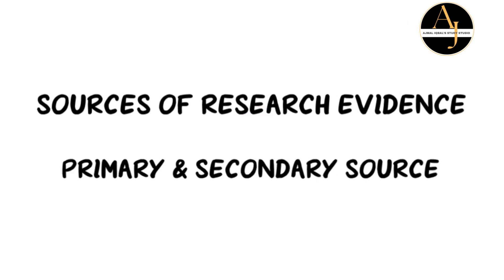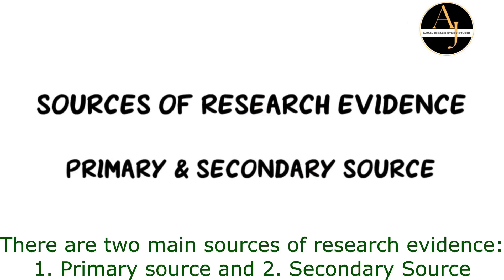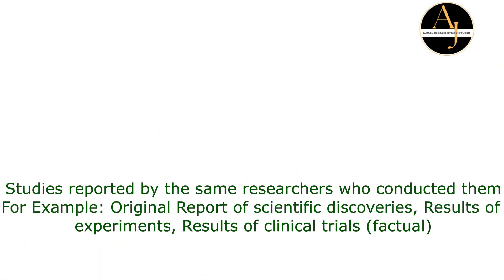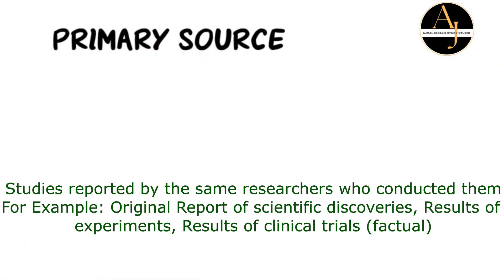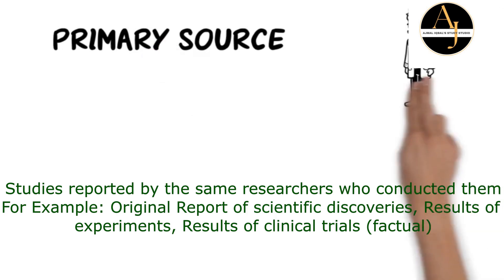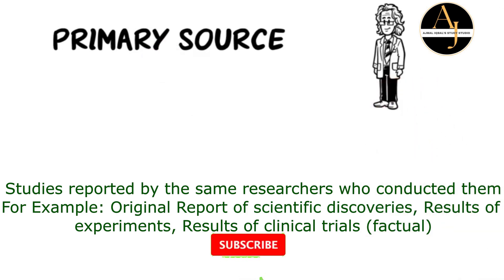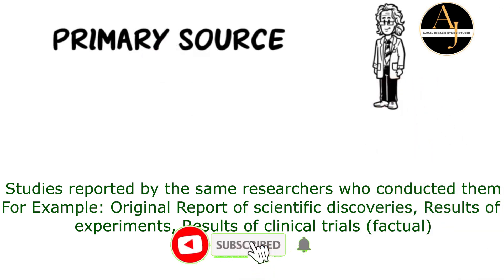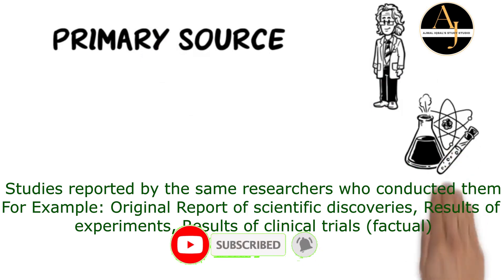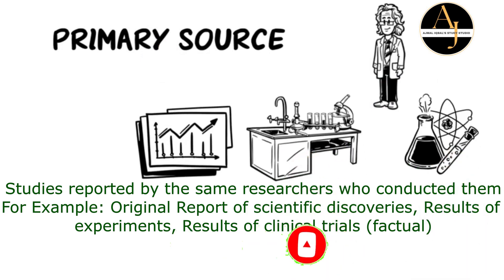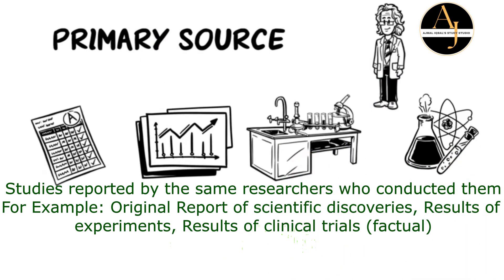Sources of research evidence: there are two main sources of research evidence — primary source and secondary source. Primary source includes studies reported by the same researcher who conducted them, for example original reports of scientific discoveries, results of experiments, and results of clinical trials.